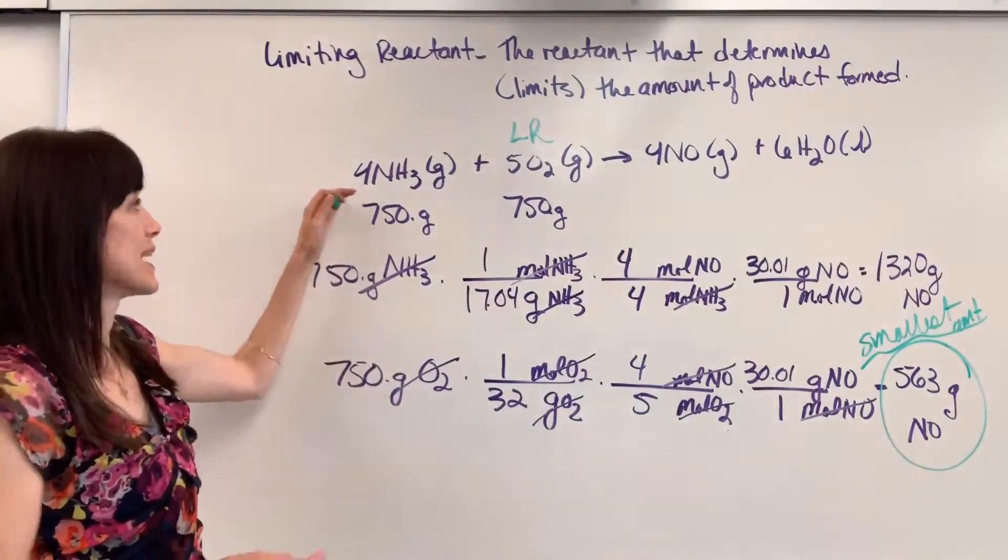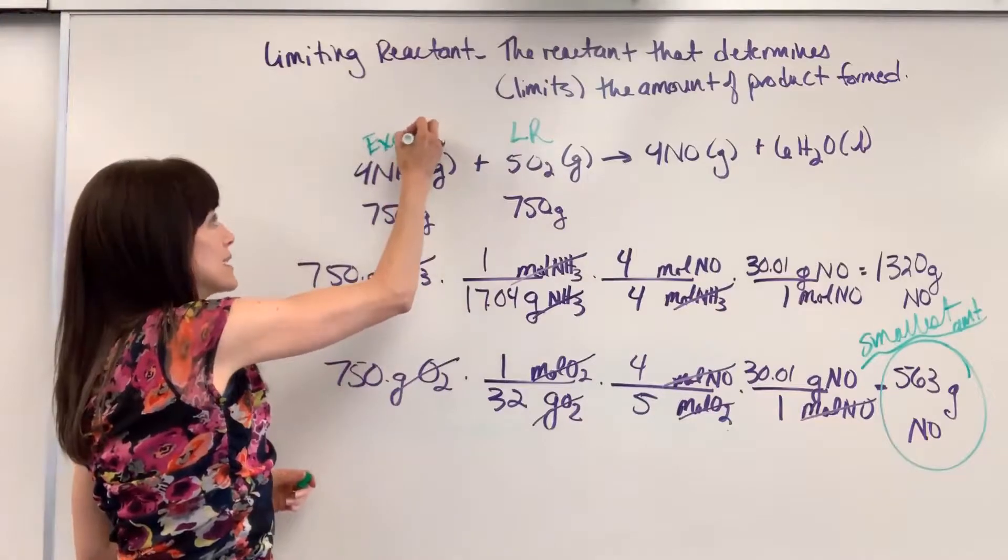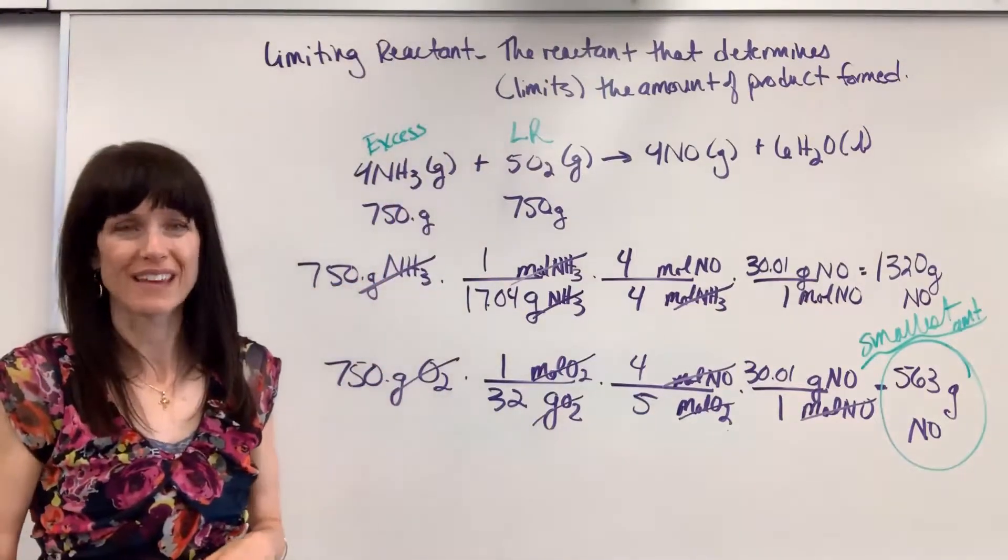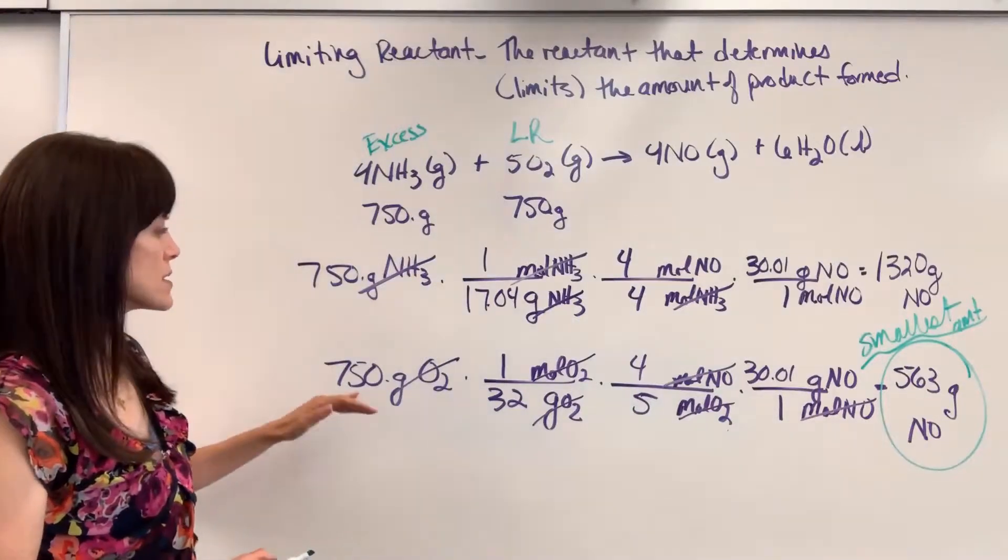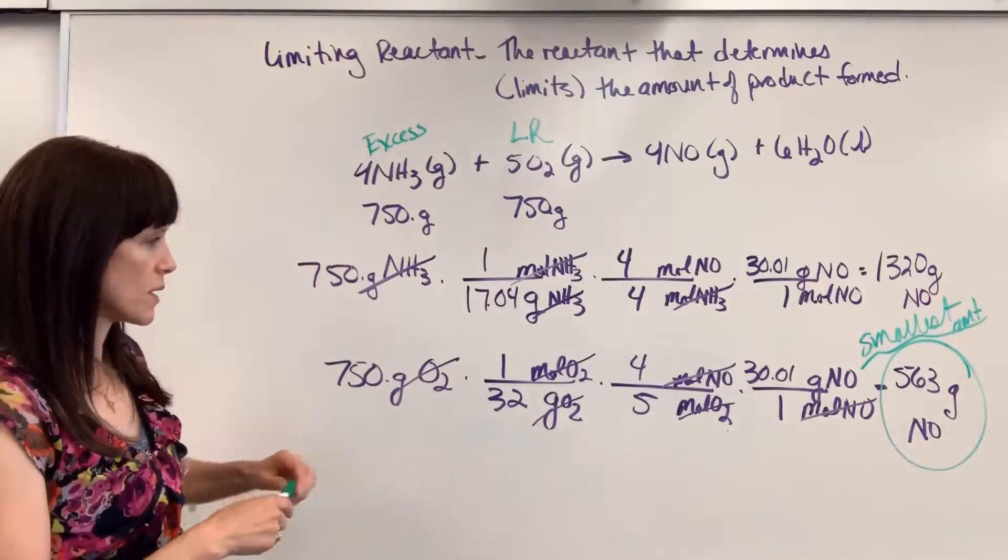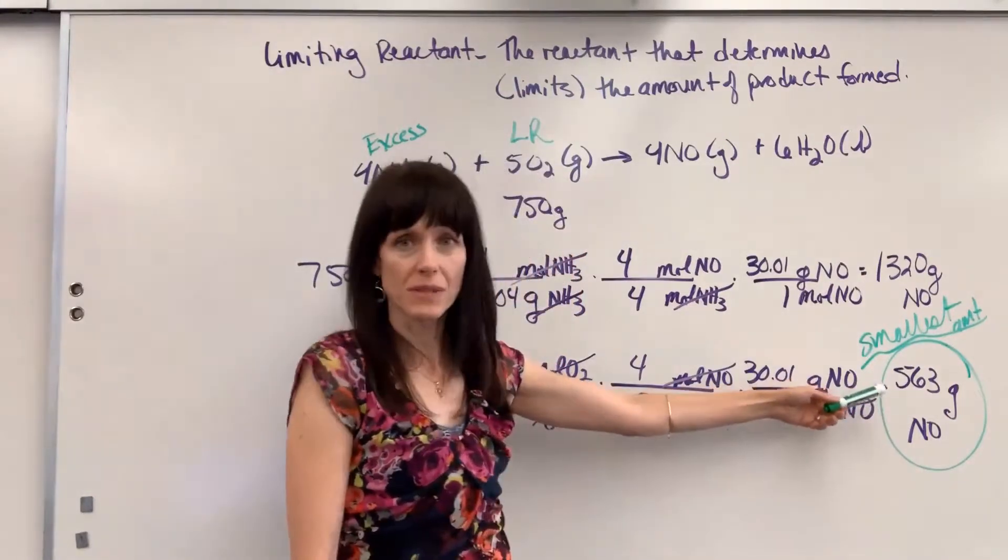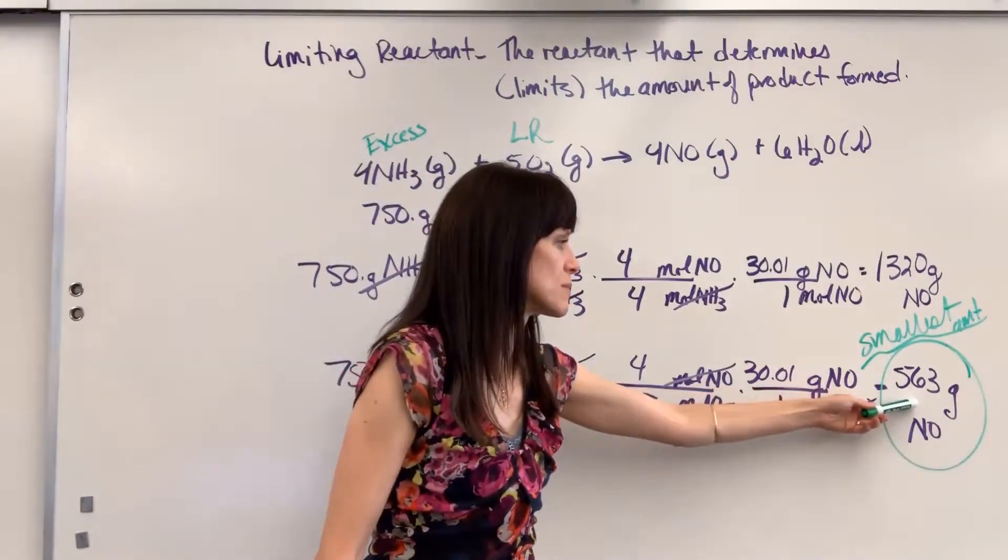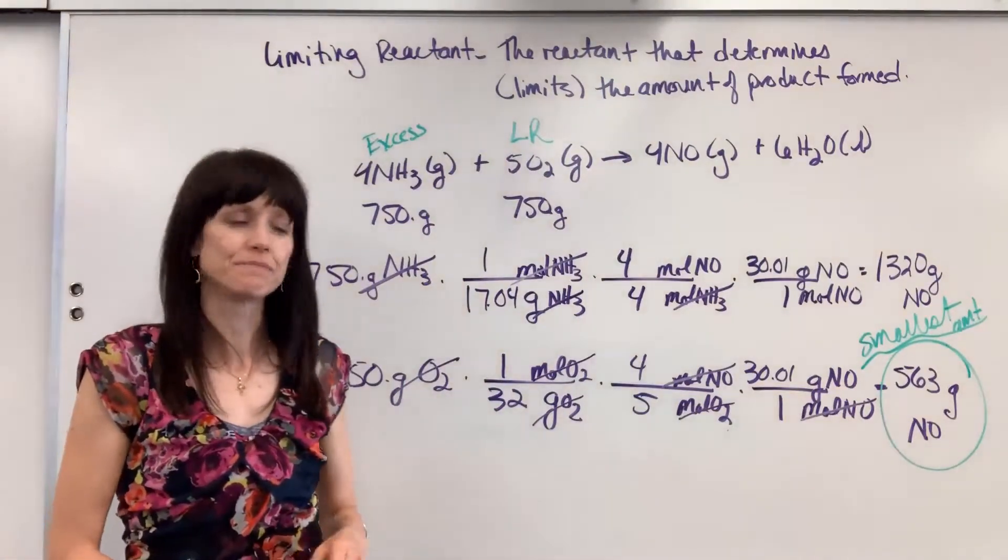because this will determine how much water is formed as well. It will also determine how much of the ammonia is consumed because when that O2 is gone, the reaction stops. By default, that means that we're going to have some leftover ammonia. That's going to be excess. There's no way we're going to use all of that up. So the smallest amount is always going to be from the limiting reactant. Whatever produces the smallest amount, there you have it. That came from your limiting reactant.